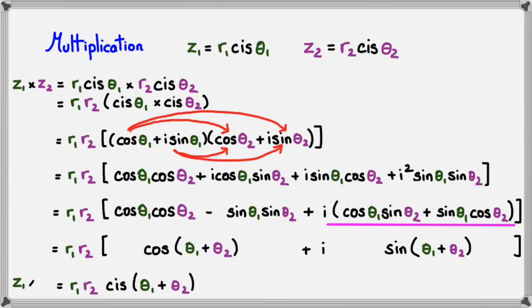So if I want to multiply z1 times z2, all I need to do is multiply the two modulus and add the two arguments. That was the long-winded proof of how to actually do this. Let's have a look at a couple of examples.